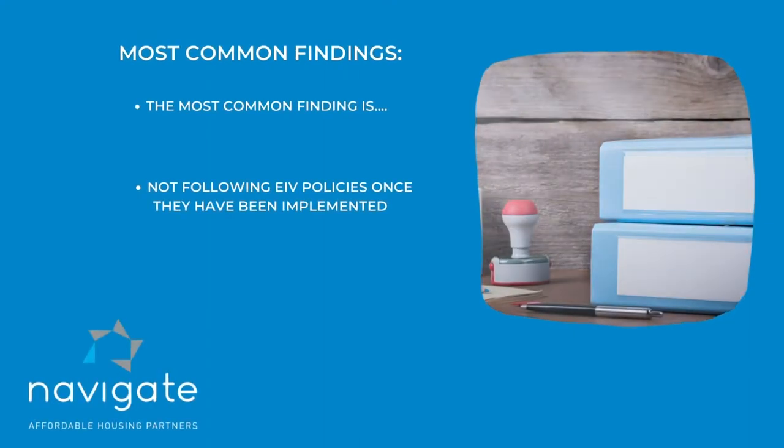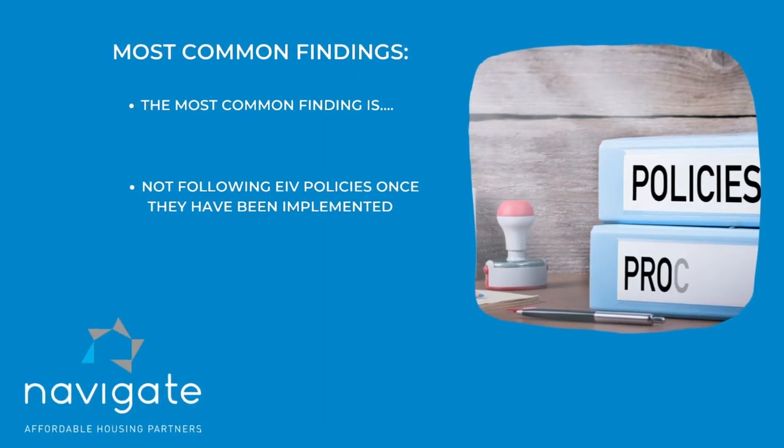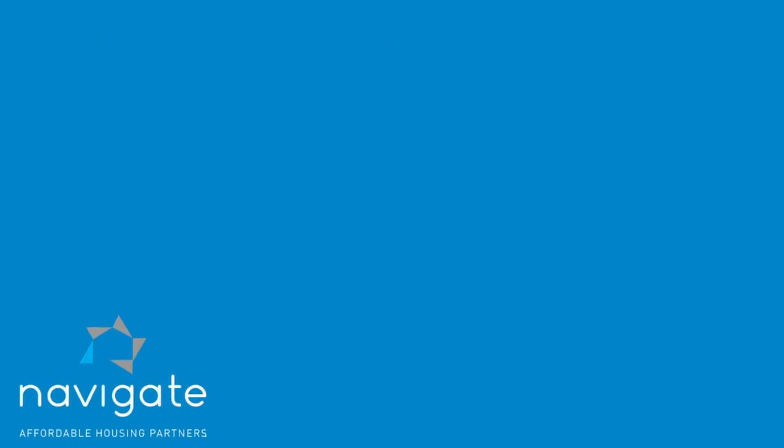We talked about the most common findings, and the most common finding is when you have an EIV policy and you don't follow the policy — that's the biggest of the common findings. There were three things I wanted you to remember: the house rules, the incidental business, and to make sure that you have all of your EIV reports pulled.